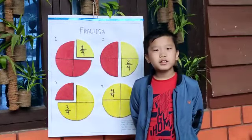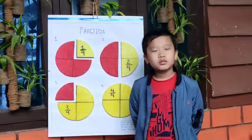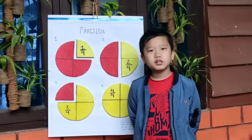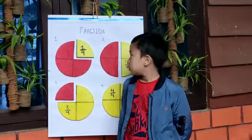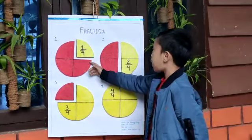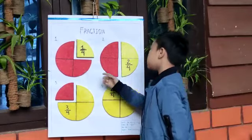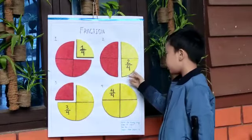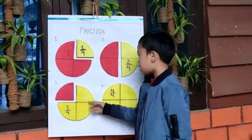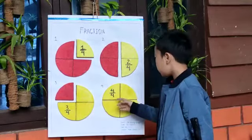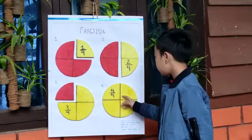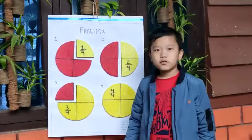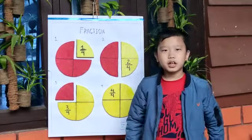To show the fraction, I use materials and colors. The first one is one by four. The second one is two by four. The third one is three by four. The fourth one is four by four, which is whole. Thank you.